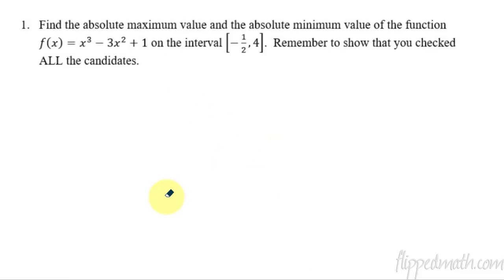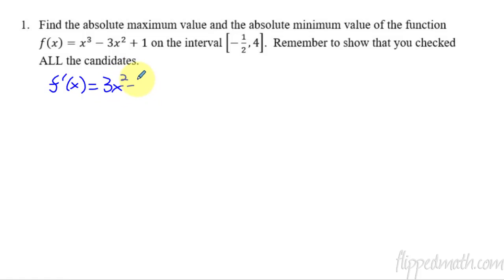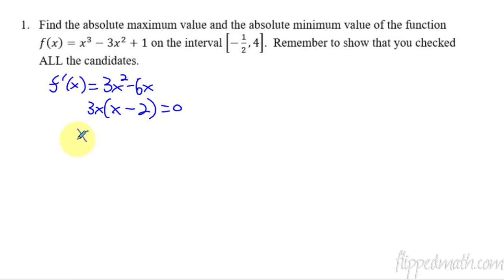Let's do an example. We have the function f(x) = x³ - 3x² + 1. We're going to find the absolute maximum value and the absolute minimum value on the interval [-1/2, 4]. The first thing we do is figure out all the candidates. Some of the candidates are the critical points. We get critical points by taking the derivative — that's 3x² - 6x — and figuring out where the derivative equals zero. Factoring out 3x leaves x - 2, so setting equal to zero my critical points are x = 0 and x = 2.